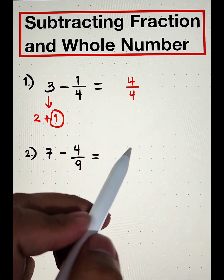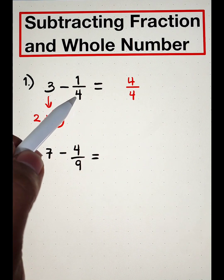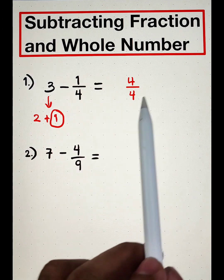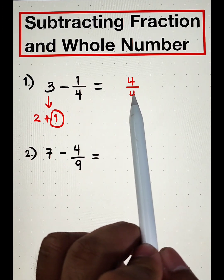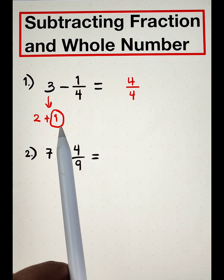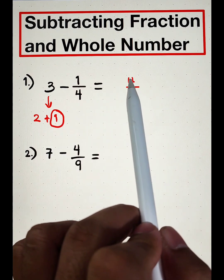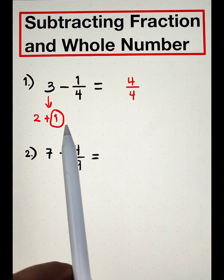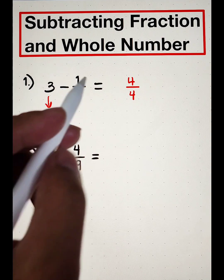So why did I choose 4 over 4? Because of this denominator. Don't worry guys. This 4 over 4 is equal to 1. Remember, 4 divided by 4 is 1. And then we will attach this whole number 2.